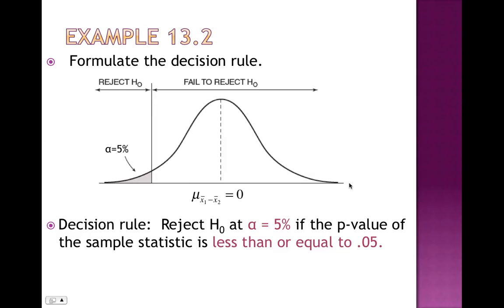The decision rule is to reject the null hypothesis at α = 5% if the p-value of the sample statistic is less than or equal to 0.05. This decision rule has been maintained throughout every hypothesis test we've done — we always compare the p-value to alpha, and if it's less than or equal to alpha we can reject the null hypothesis.